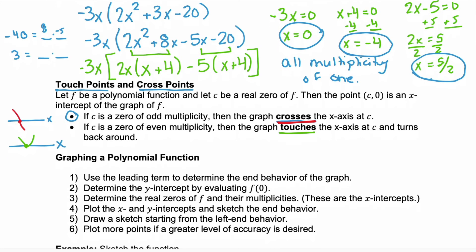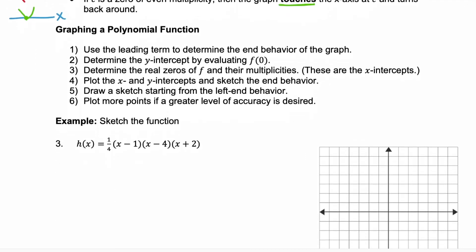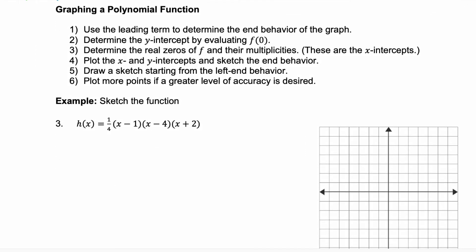So, let's put all of this together, our end behavior and our intercepts and try to graph a polynomial. So, here, we're going to follow these six steps and we'll go through each of them as we work on example three. Step one is to use that leading term to determine the end behavior of the graph. So, step one, our leading term. Remember, we're going to multiply all of those together.